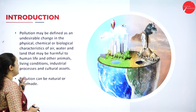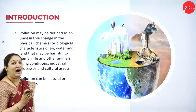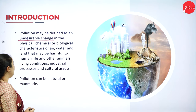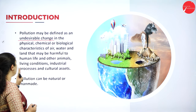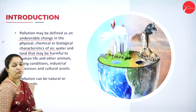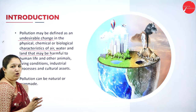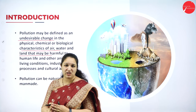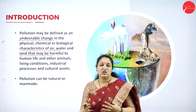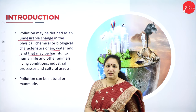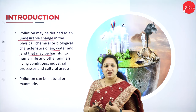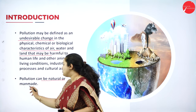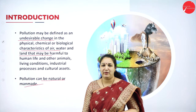So what exactly is pollution? Pollution can be defined as any undesirable change in the physical, chemical, or biological characteristics of air, water, and land that may be harmful for human beings, animals, or any living organism on the earth. Any undesirable change to the physical or chemical structure of water, air, or land which is harmful for any living organism is called pollution. Pollution can be natural or man-made, and most of it is man-made.